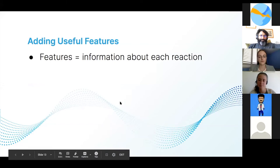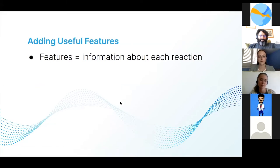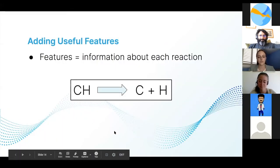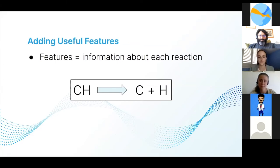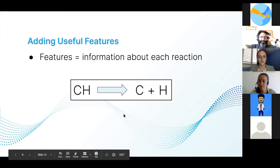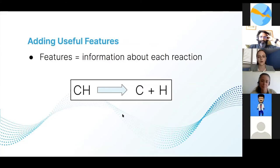Then we wanted to add some more useful features to the data. Features are information about each reaction that we can add using our knowledge from chemistry or intuition. For example, in a reaction where CH breaks down into carbon and hydrogen, you might notice there are carbon and hydrogen present, or that there is one reactant and two products. We came up with as many features as we could and turned them all into numbers so the algorithm can read and use them.